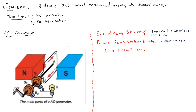Now, what you see here is a generator. A generator is a device that converts mechanical energy into electrical energy. When I talk about mechanical energy, I'm referring to rotational energy within a magnetic field. This rotational energy is converted into electrical energy — that is the function of the generator.